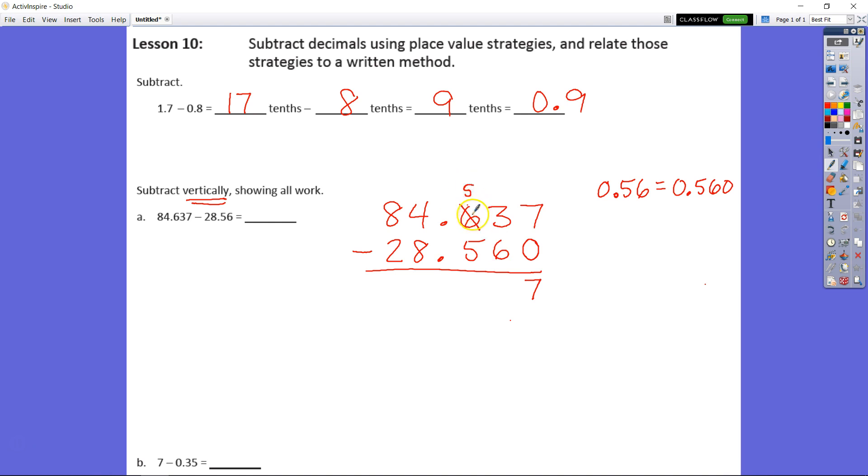So now 6 tenths is going to become 5 tenths because we're regrouping 1 tenth as 10 hundredths. So now we have 13 hundredths. So now we have 13 hundredths minus 6 and we know that that is 7 and then we have 5 tenths minus 5 tenths is 0.